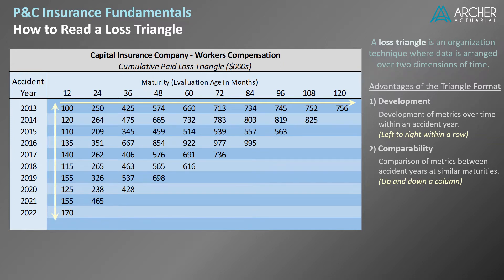In other words, metrics sharing a column are on an apples-to-apples basis with respect to maturity. Over the next few minutes we're going to delve into these concepts and more with the help of our example triangle.